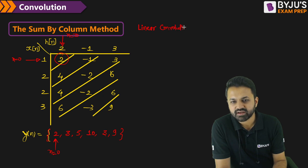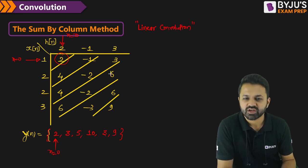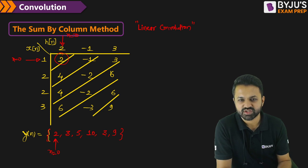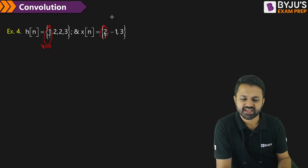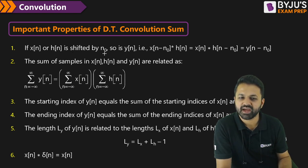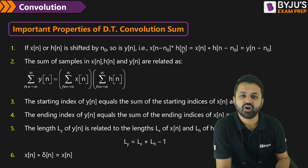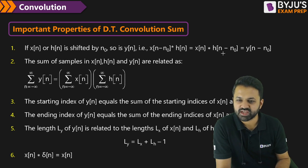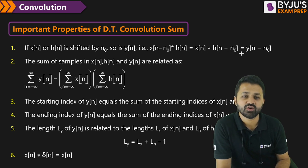In some other lecture of Coffee with Concepts we will understand circular convolution. Now, what are the important properties of the discrete time convolution sum? If x of n and h of n are each shifted by n naught, then y of n — that is x(n minus n0) convolved with h of n — is nothing but x of n convolved with h(n minus n0), meaning the output is also shifted by n naught.